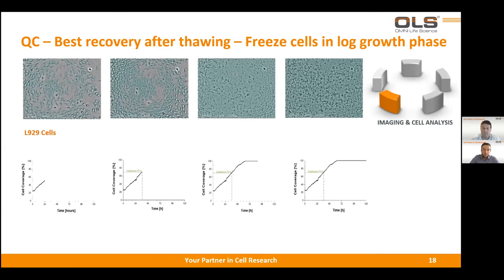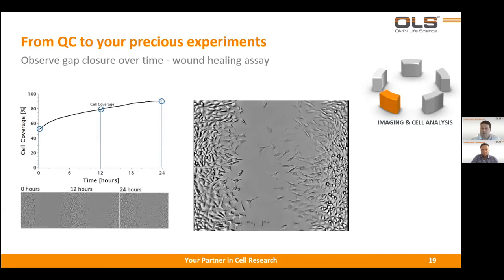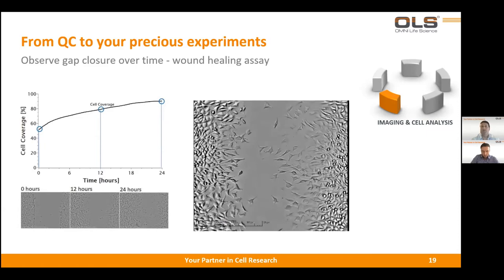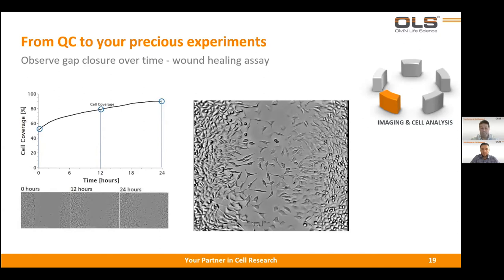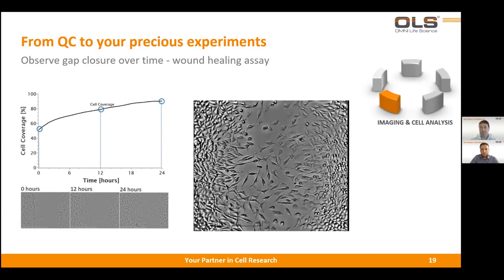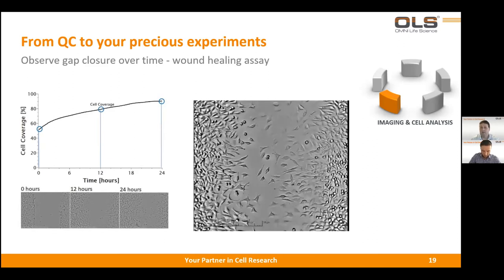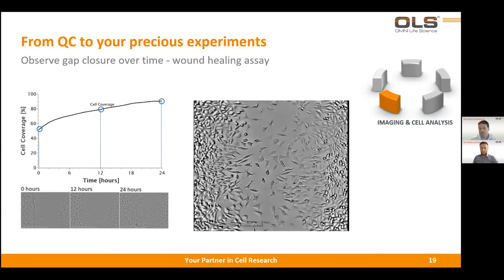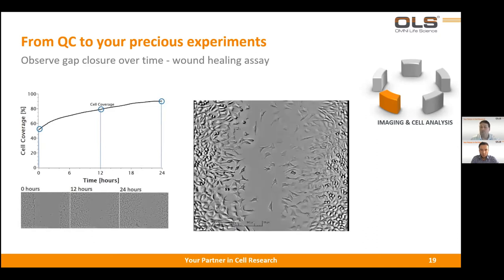The Sensel OWL is suitable for real-time monitoring. For example, you can observe gap closure over time in a wound healing assay — also called scratch assay. You take a cell culture plate, let the cells grow, then make a scratch, for example with a pipette tip. The cells grow toward the gap and try to close it, which you can observe with the Sensel OWL. From these pictures and measured data, you can draw important conclusions about the properties of your cells.